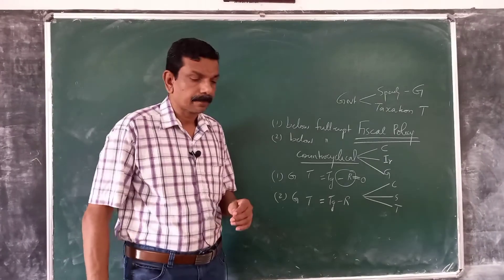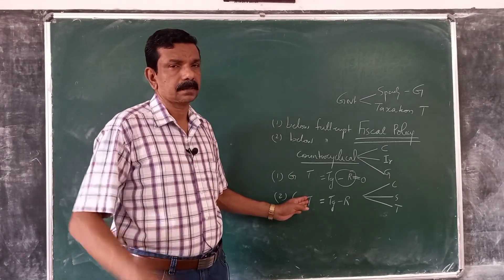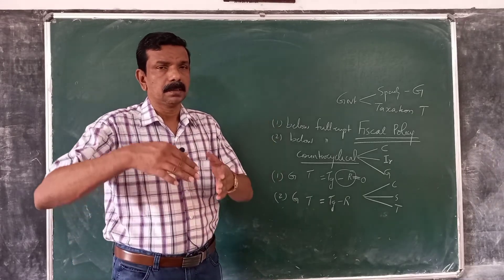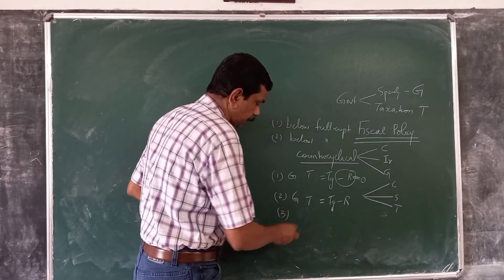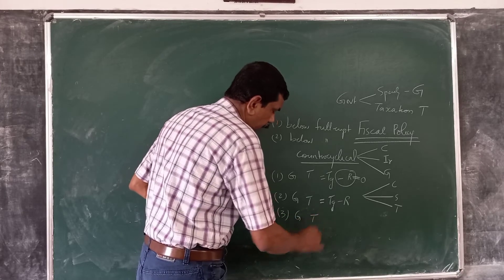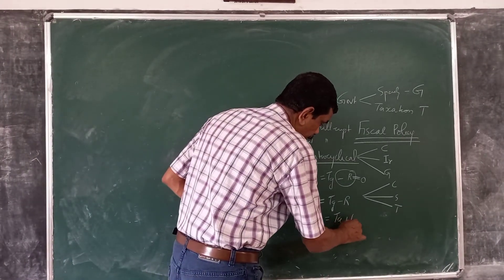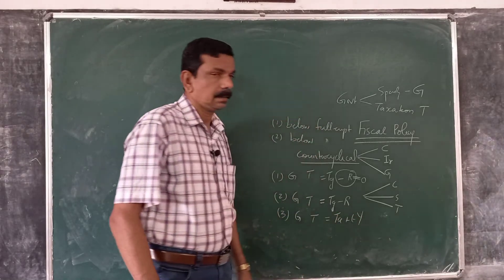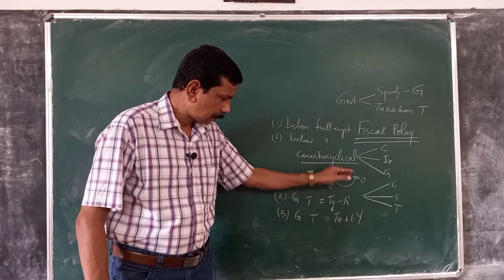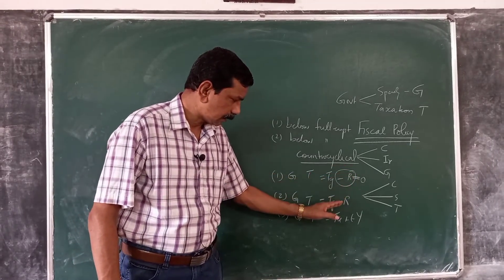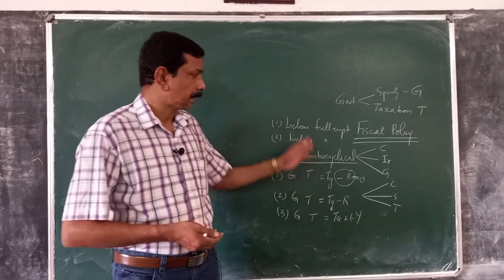In the third model, taxes are considered as a function of income — that is, T equals Ta plus Ty — where Ta is autonomous tax (a head tax imposed on persons irrespective of the level of income) and Ty represents the income-dependent component. So we develop three fiscal models to analyze the effect of gross tax, transfer payments, and income tax. That is our next concern: developing macroeconomic models incorporating government in the form of government spending and taxation, or what is known as fiscal policy.